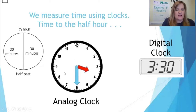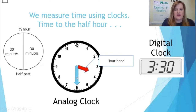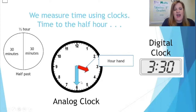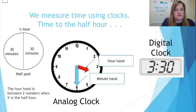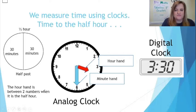Let's look at our analog clock. You'll notice something different about the hour hand and the minute hand this time. The shorter hand is the hour hand. Now look at this hour hand — it's past the three, but it has not gotten to the four yet. When we read this time, we say 'half past' because it's halfway. So it's half past three. Or, since the minute hand points straight down, that's 30 — so this clock says 3:30, or half past three. The hour hand is between two numbers when it's the half hour.